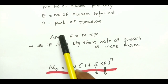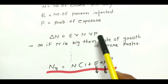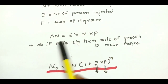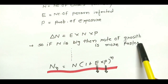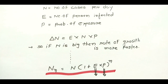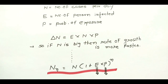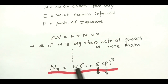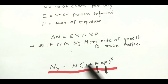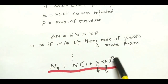Now we can define a growth rate that is directly E times N times P. So you can see that delta N — the change in the number of persons infected — is E times N times P. As we can see, if N is bigger then the rate of growth is faster. The total number of infected persons for the nth day is capital N times (1 plus E times P) raised to n. So here we can see this equation is exponentially increasing. We can define the constant as (1 plus E times P), which is in exponential form.